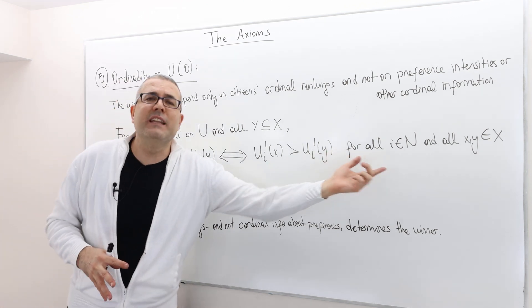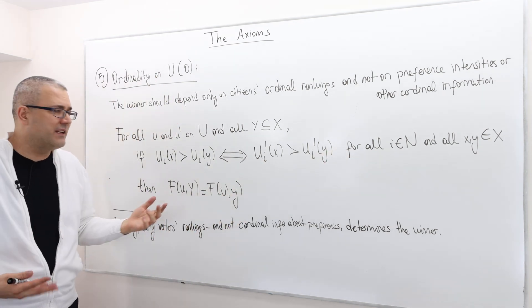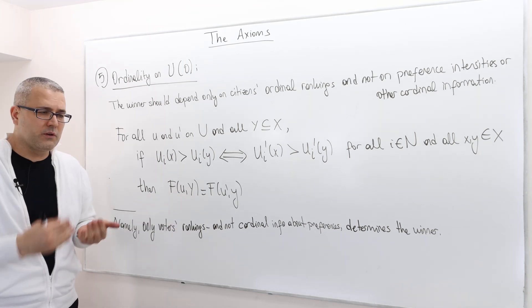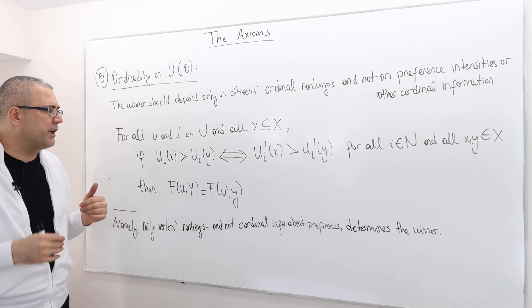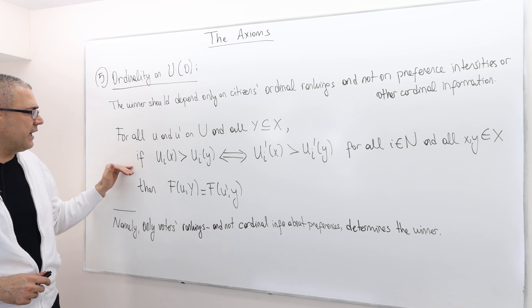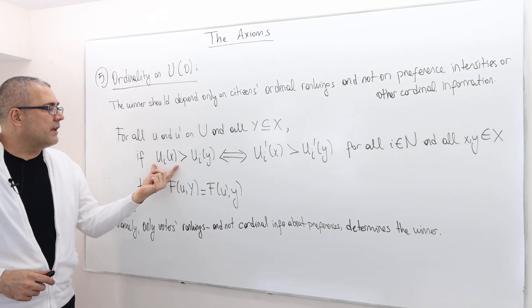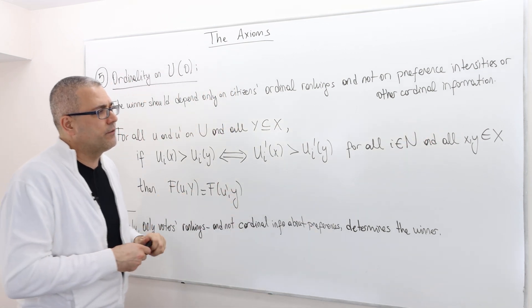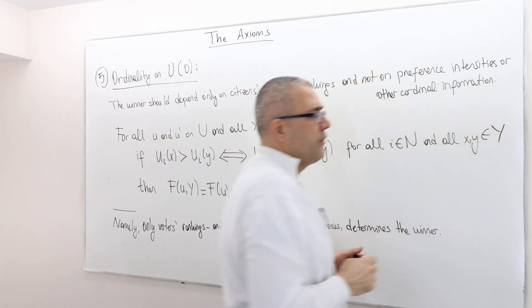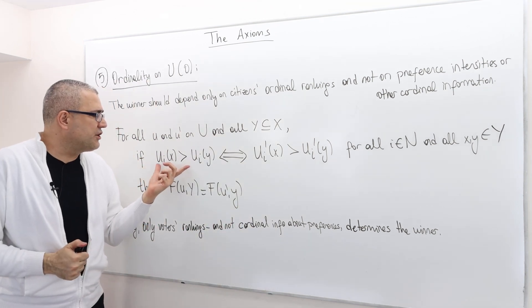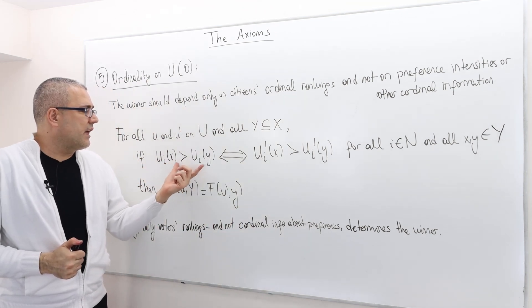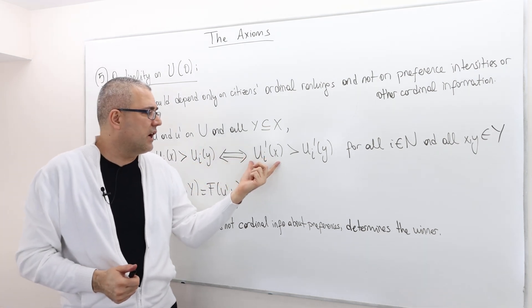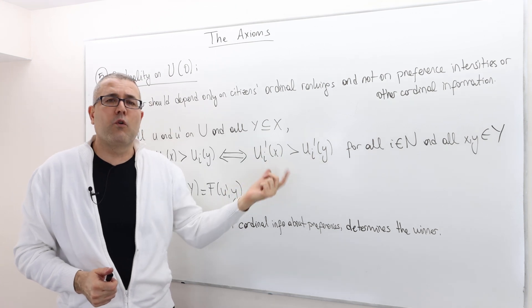This is what this condition means. So how do we mathematically define or say that U and U prime have exactly the same ordinal information or preferences? Well, this is how we say it. For every individual and for any X, Y in the set of alternatives Y, Agent I prefers X to Y under U if and only if Agent I prefers X to Y under U prime.